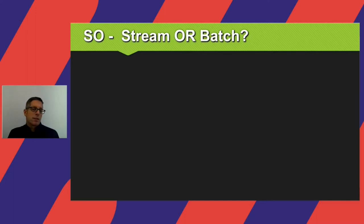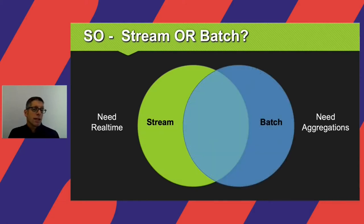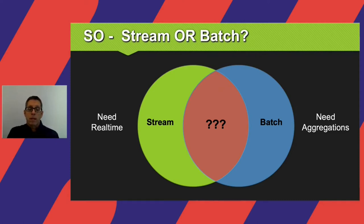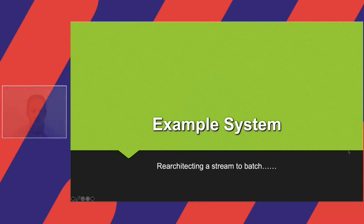In some cases the answer is obvious. If you need real-time data, you go with stream — no other choice. But if you need a lot of aggregations, meaning you have to wait until all data arrives before aggregating, you would go with batch because you have to wait anyway. But what about all the cases in the middle, where you can do either one? Let's see an example system. I'm going to pass it on to Ido, who will tell you all about it.